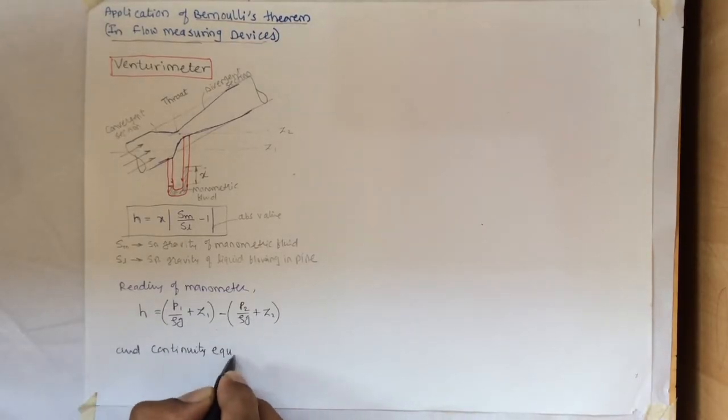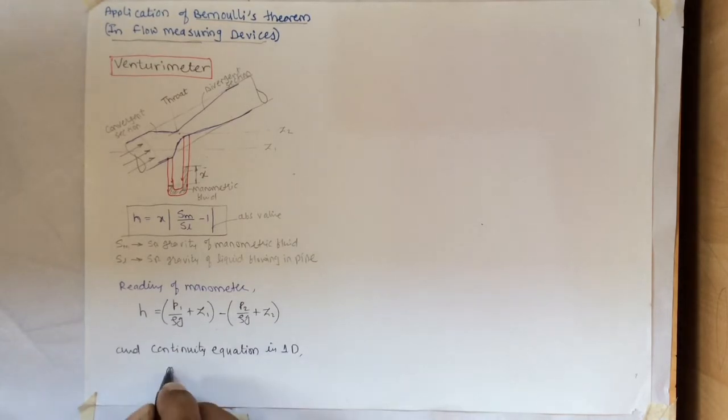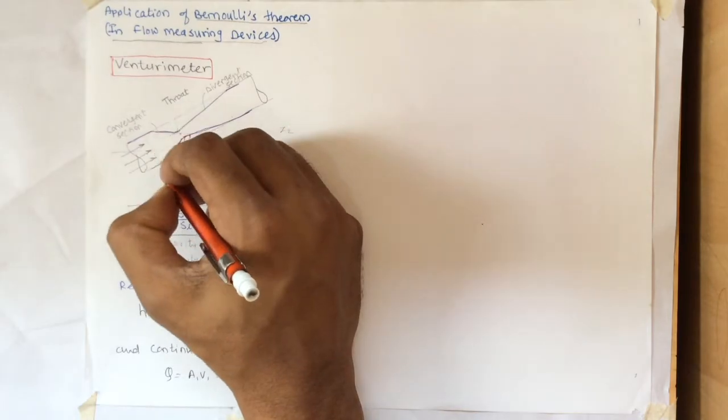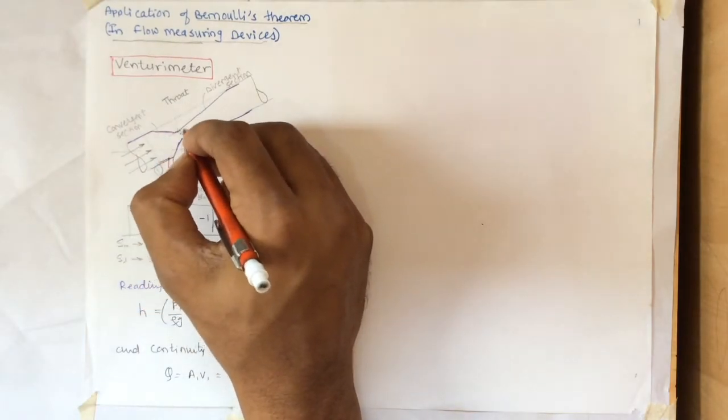And the continuity equation in one dimension, we can write it as Q equals A1 V1 equals A2 V2. Let's check this inlet section as section 1, throat section as section 2.